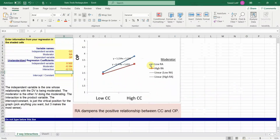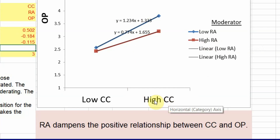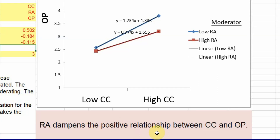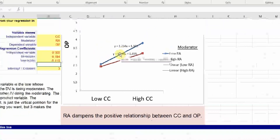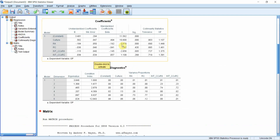Here is the graph. The low role ambiguity line is much steeper than the high role ambiguity line. At low role ambiguity there is a stronger positive relationship between collaborative culture and organizational performance, whereas at high role ambiguity, increasing collaborative culture does not increase organizational performance in the same manner. This means higher role ambiguity dampens the positive relationship between collaborative culture and organizational performance. I hope this session helped you understand how to manually perform moderation analysis using SPSS. Thank you.